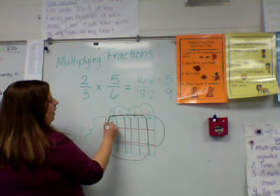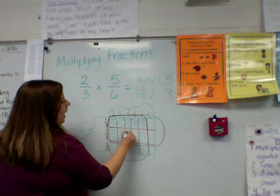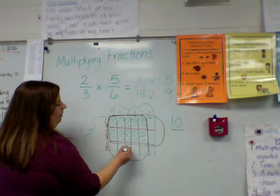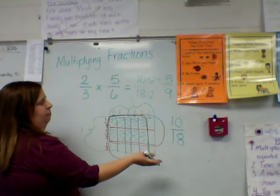Let's go ahead and count those. Counting the overlapping squares, we get a numerator of 10. And then when we count the total number of squares in the rectangle, we get 18. So we got the same answer: ten-eighteenths — the same as when we multiplied across.